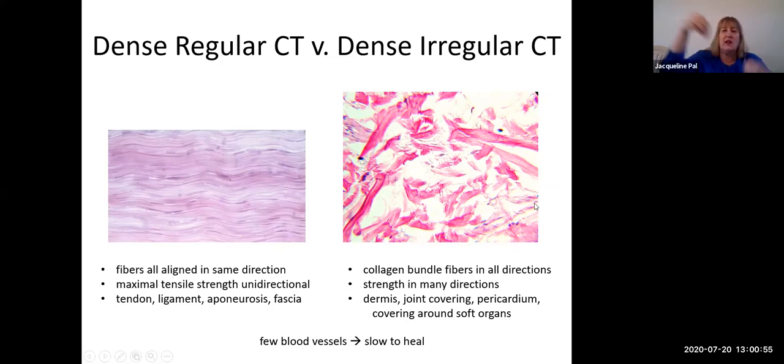That gives us strength in many directions. This is what we have in our deeper layer of skin, around our joints in the pericardium, and covering some of our soft organs such as our spleen and kidneys. Now if you notice, these are chock full of collagen, so they don't have very many vessels bringing nutrition in them, so it makes them slow to heal. Tendons and ligaments definitely heal a lot slower than an injury to a bone, for instance.